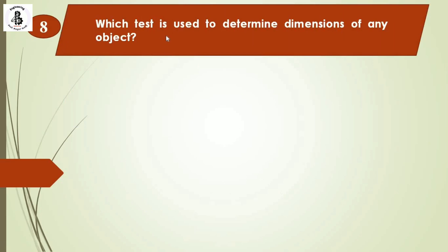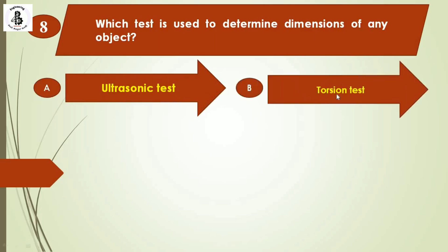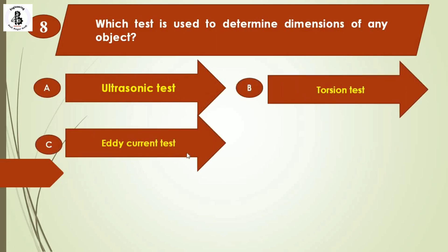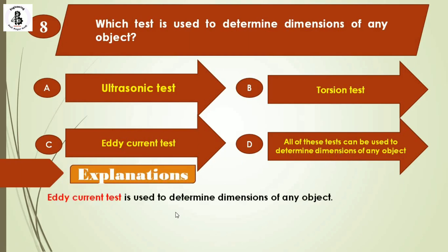Next question: Which test is used to determine dimensions of any object? Option A: ultrasonic test. Option B: torsion test. Option C: eddy current test. Option D: all of these. The eddy current test is used to determine the dimensional accuracy of an object. The right answer is option C.